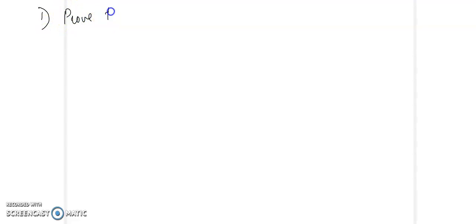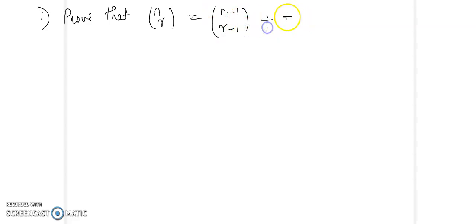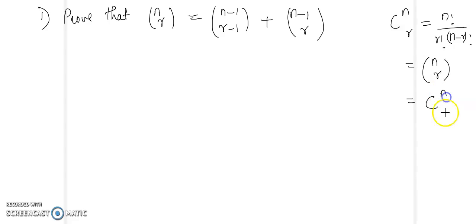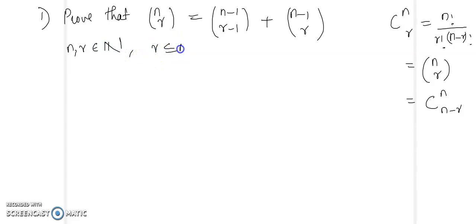Good morning all. In today's class we will see a few problems on combinations. The first question is: prove that NCR equals N-1CR-1 plus N-1CR. CNR is N factorial by R factorial into N-R factorial. CNR is also equivalent to CNN-R — if you find CNN-R you get the same expression. So CNR is the same as CNN-R. Here N and R belong to the natural numbers and R is less than or equal to N.